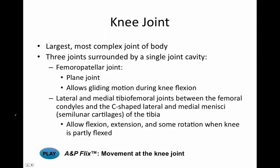The knee joint is our largest, most complex joint of the body, and it's actually three joints surrounded by a single joint cavity. There's the femoropatellar joint — the patella sliding over the top of the femur — which is a plain joint with gliding motion. Then we have the lateral and medial tibiofemoral joints: the tibia with the femur, between the femoral condyles and the C-shaped lateral and medial menisci, the other two joints of the knee.